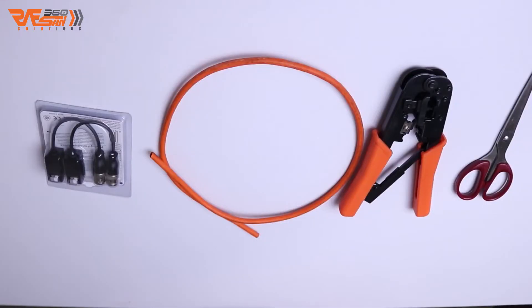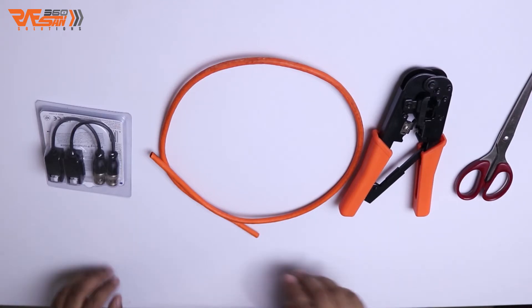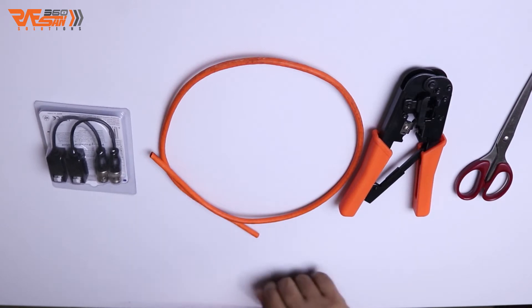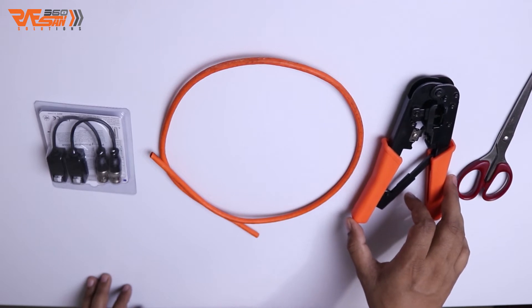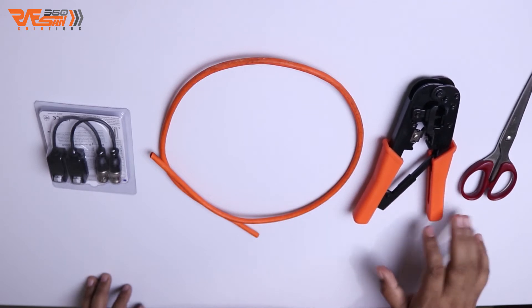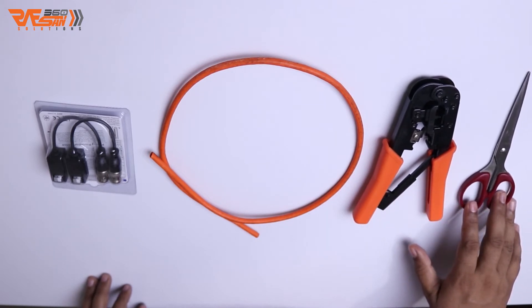Now we will see how to connect with CAT6 cable. We will use video balun and cable with our crimping tools to make the connection.